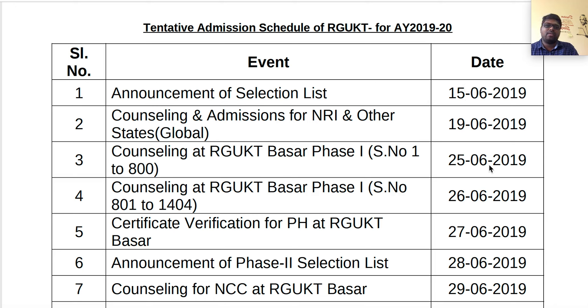Counseling for RGUKT is on 25-06-2019. There will be a 10-day gap from the 15th to the 25th — from selection list announcement to counseling — giving you time to prepare.